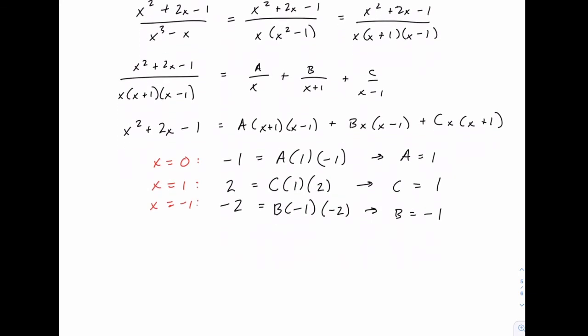Which means that this rational function that we started with can be rewritten as 1 over x minus 1 over x plus 1 plus 1 over x minus 1.